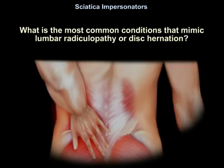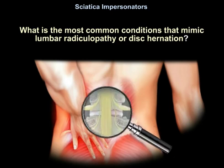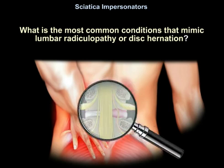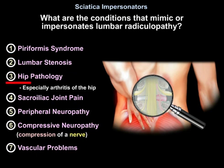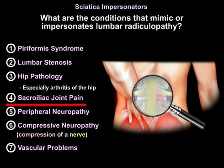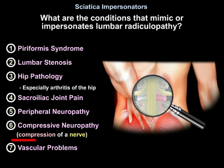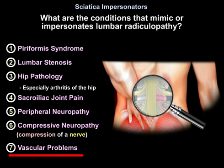What are the most common conditions that mimic or impersonate lumbar radiculopathy or disc herniation? Number one: piriformis syndrome. Number two: lumbar stenosis. Number three: hip pathology, especially arthritis of the hip. Number four: sacroiliac joint pain. Number five: peripheral neuropathy. Number six: compressive neuropathy, meaning compression of a nerve. Number seven: vascular problems.